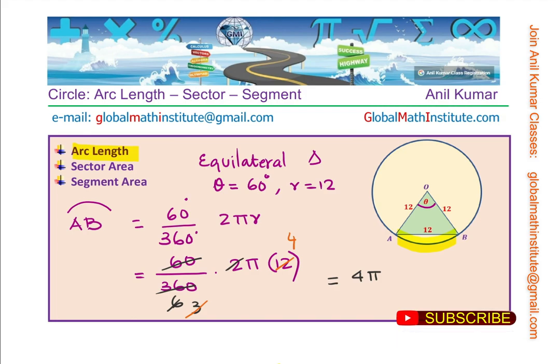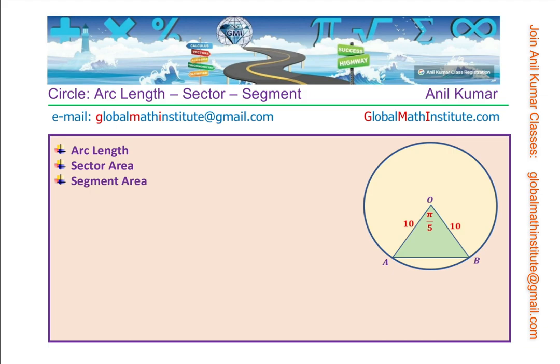Therefore we get our answer as equal to 4π. So that is how we can find the arc length. See how we have simplified—we are not using calculator but we are providing exact value of the arc length.